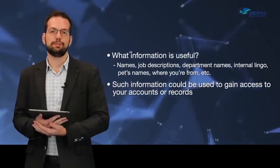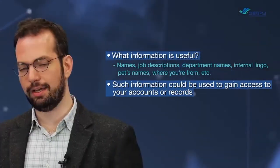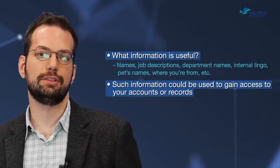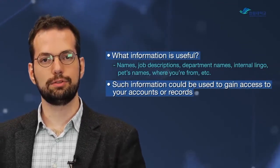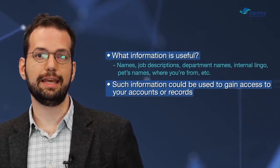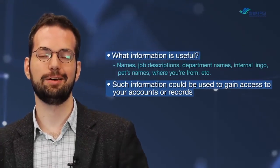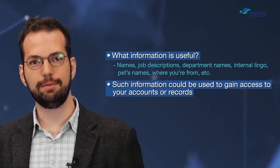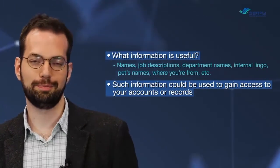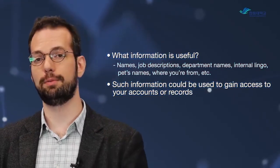What information is useful in social engineering depends on the goal, but it's usually about gaining access to areas or information. Helpful information includes names, job descriptions, department names, and any internal lingo a company might use. With that, a social engineer might convince someone over the telephone or in person that they actually belong inside the company. Online, if we have your name, your department, or your boss's name, we can pretend to be the IT department and you might give us personal information you really shouldn't be giving out.